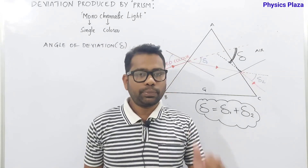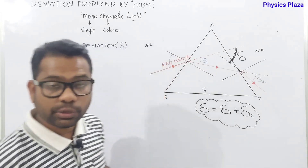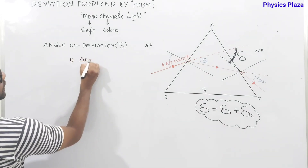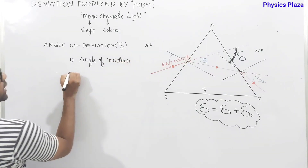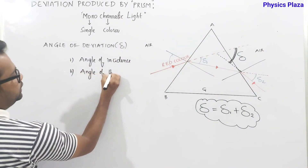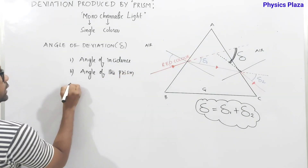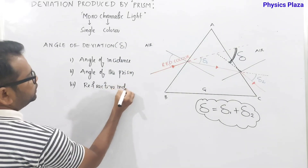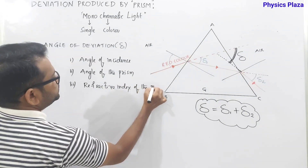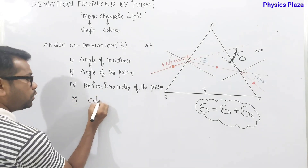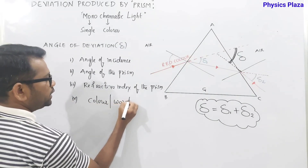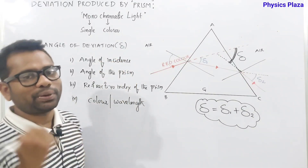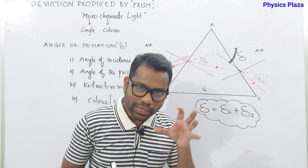The angle of deviation depends on four factors: the angle of incidence, the angle of the prism, the refractive index, and the color (or wavelength) of light.